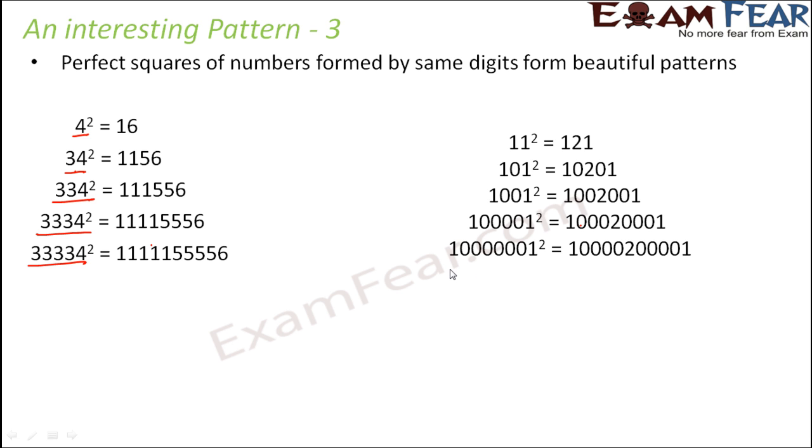Now looking at this, if I ask what would be the square of this number with one more zero, very easily looking at the pattern you do not need to do the multiplication at all. Earlier there were five zeros, now this would be six. This side instead of four you have five zeros, this side also five zeros.